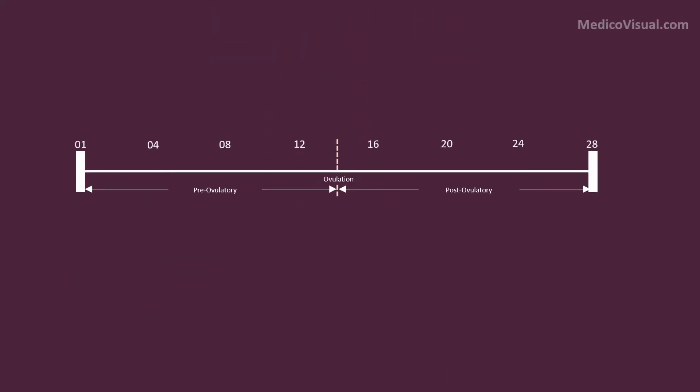The average length of the female reproductive cycle is 28 days. It can be divided into pre-ovulatory, ovulation, and post-ovulatory phases.